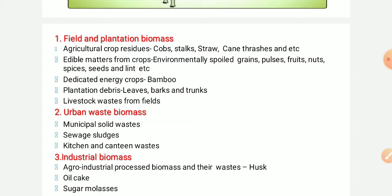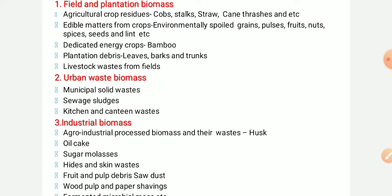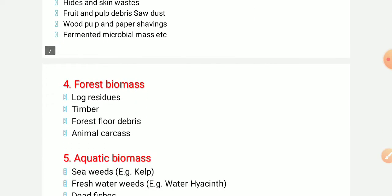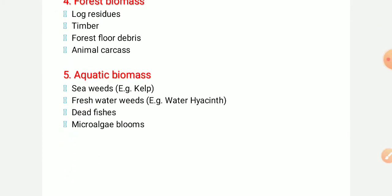Other biomass sources include livestock waste, municipal solid waste, sewage sludge, kitchen and canteen waste, industrial biomass from agro-industrial processes such as oil cake, sugar molasses, hide and skin waste, food and pulp debris, wood pulp and paper savings, and fermented microbial biomass. Forest biomass includes the timber forest floor and animal carcasses. Aquatic biomass includes seaweed and freshwater plants such as water hyacinth.